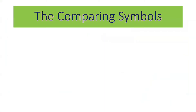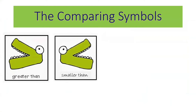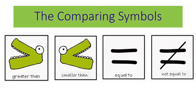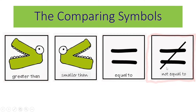The comparing symbols used to compare numbers are: greater than — remember its shape, the opening is toward your left; smaller than — remember the shape, its opening is toward your right; equal to — you can see two parallel lines; and not equal to — you can see a slanted line on the equal sign. These are: greater than, smaller than, equal to, and not equal to.